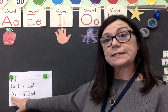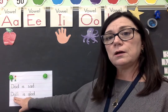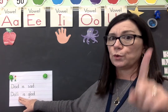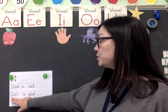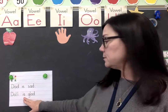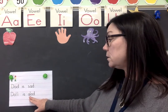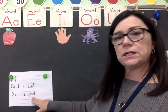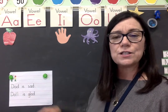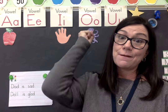Our next sentence starts with 'Dal' — d-a-l-l. Remember: two L's but only one sound. Dal. Then our sight word 'is,' and then 'glad' — g-l-a-d. Dal is glad. Watch me read that: Dal is glad.